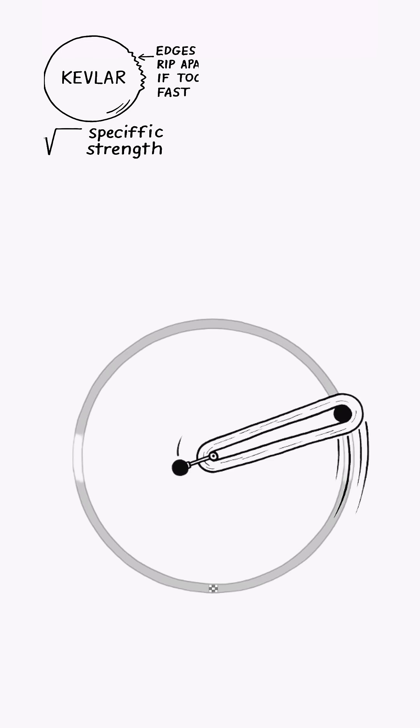This lets us apply one of my favorite weird equations, which says that the edge of a spinning disc can't go faster than the square root of the specific strength of the material it's made of, or it'll tear itself apart.